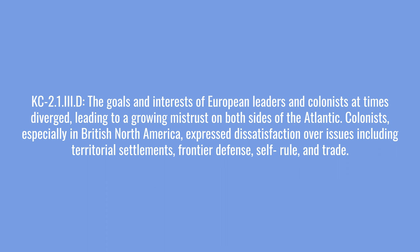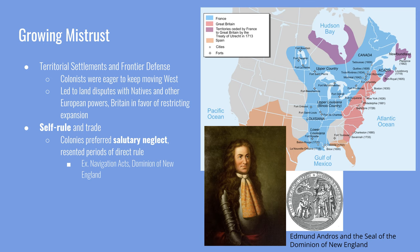Territorial settlements and frontier defense go hand in hand. Colonists were eager to keep moving west as land was beginning to fill up, but westward expansion brought more land disputes with natives and other European powers, and possibly more wars. When colonists saw that the Crown or royal governors were not willing to guarantee continued expansion and defense for that expansion, it created mistrust. When it comes to self-rule and trade, the colonies preferred the era of salutary neglect, and any time Britain tried to implement more direct rule — like with the Dominion of New England or enforcing the Navigation Acts — it usually led to problems. The lack of consistent enforcement made it easy to skirt the rules, creating the perception that colonists were deviant smugglers unwilling to follow the law.